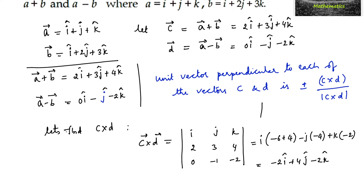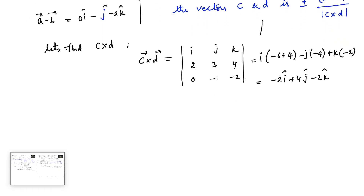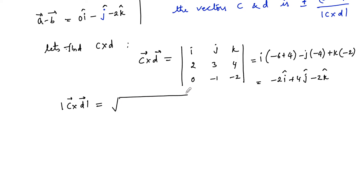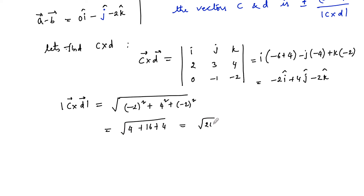Let us also find the magnitude. The mod of c cross d is equal to the square root of the sum of squares of the scalar components, that is root of minus 2 whole square plus 4 whole square plus minus 2 whole square, which equals root of 4 plus 16 plus 4, equal to root of 24, which we can write as 2 root 6.